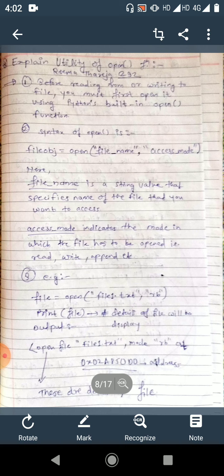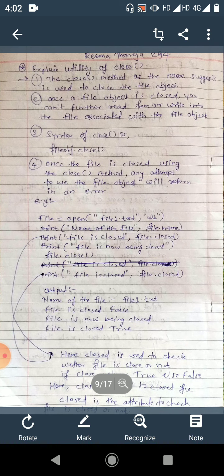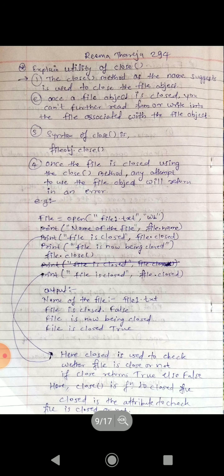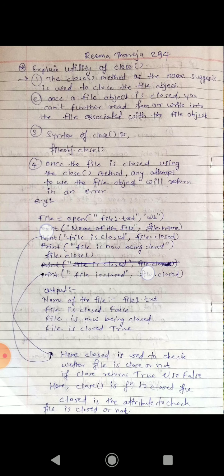Next one is explain utility of close function. The close method, as the name suggests, is used to close the file object. Once the file object is closed, you can't further read from or write into the file associated with the file object. The syntax is file obj dot close. Once the file is closed using the close method, any attempt to use the file object will return an error.